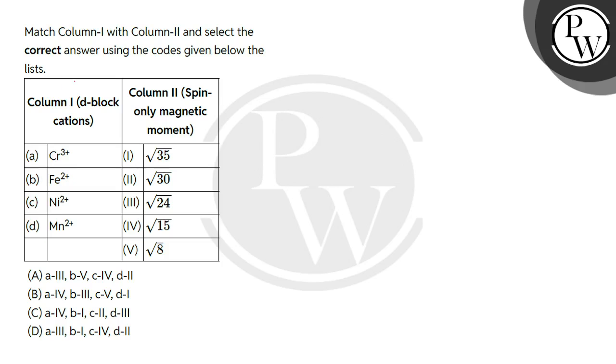Hello students, let's have this question. The question says match Column 1 with Column 2 and select the correct answer using the code given below the list. So Column 1 is d-block cations and Column 2 is spin-only magnetic moment.